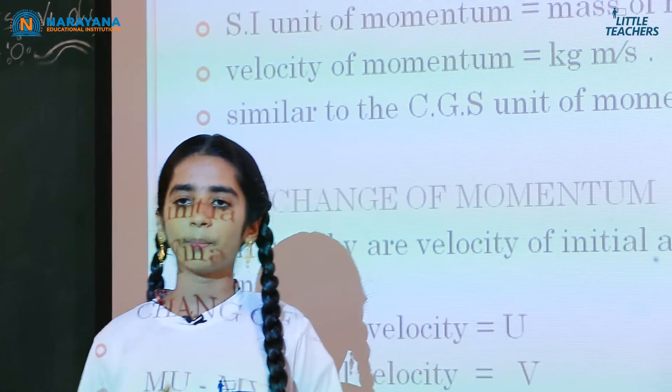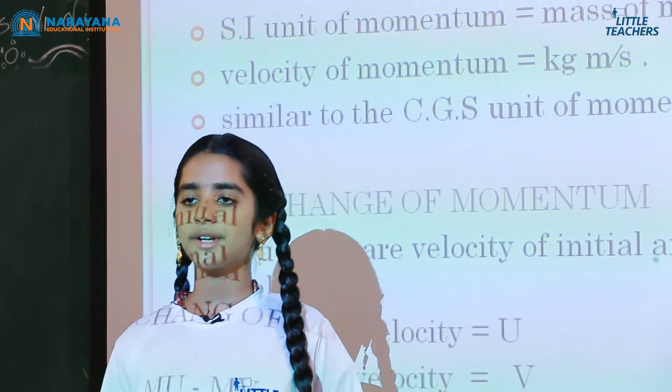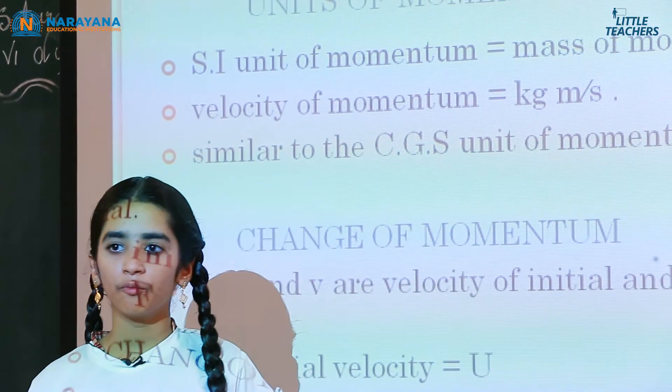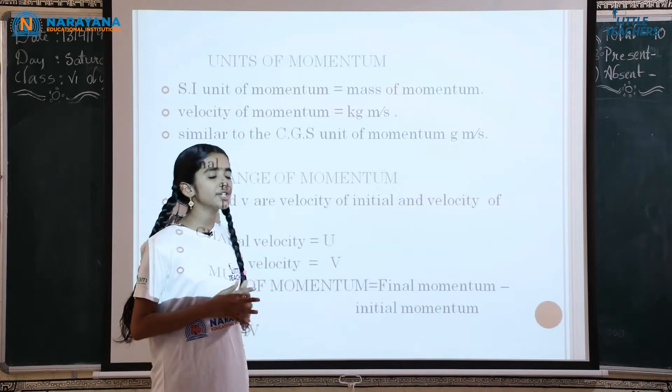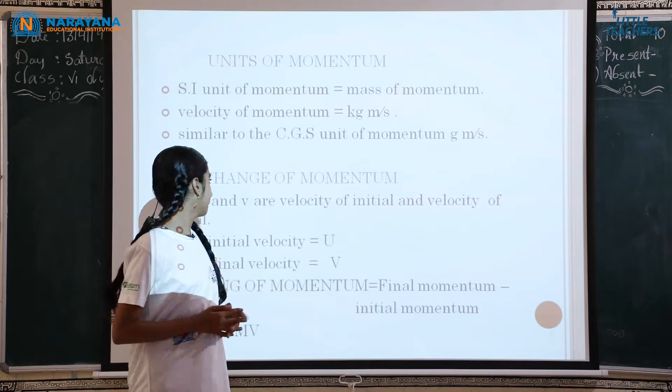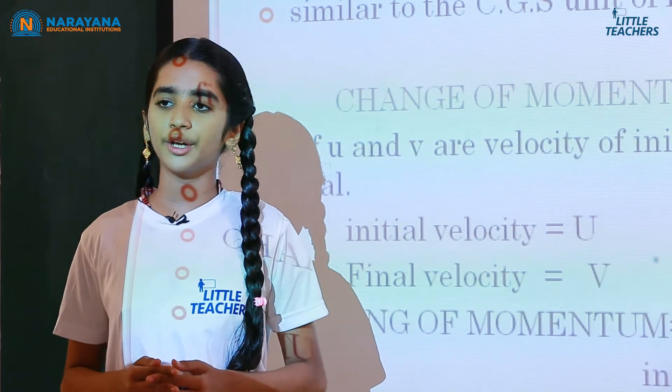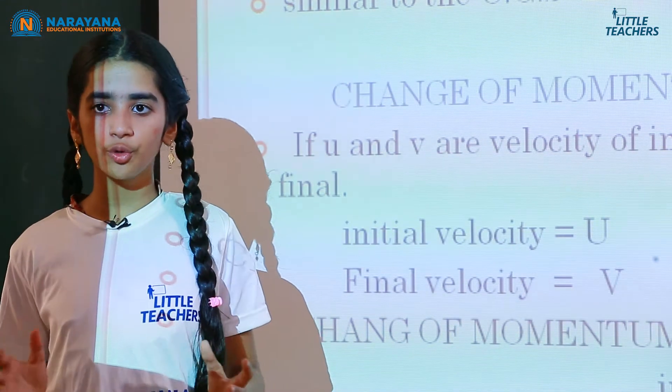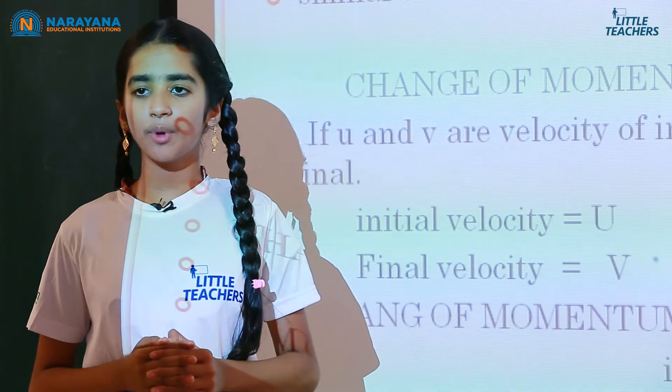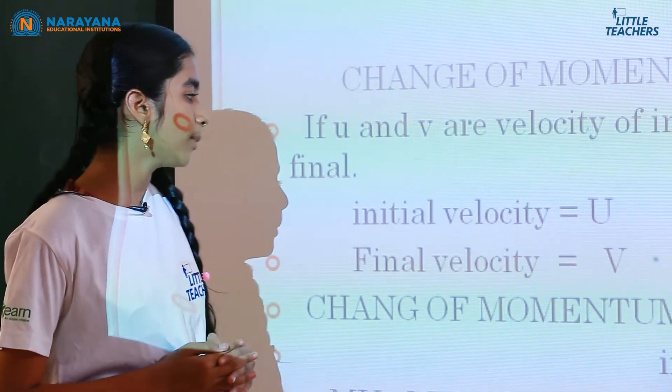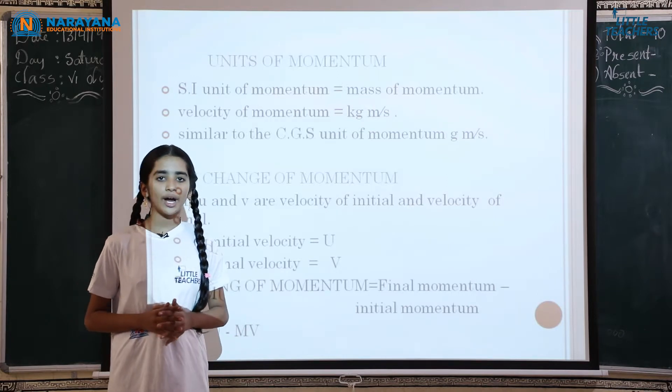Children, now I will say two small topics: units of momentum and change of momentum. SI unit of momentum equals mass of momentum. Velocity of momentum is kg meter per second. Similar to the CGS unit, centimeter per second. Change of momentum: if U and V are the velocity of initial and velocity of final body, initial velocity equals U, final velocity equals V. We will use the change of momentum formula MU minus MV. With this formula, we can do any question. I hope you understood.